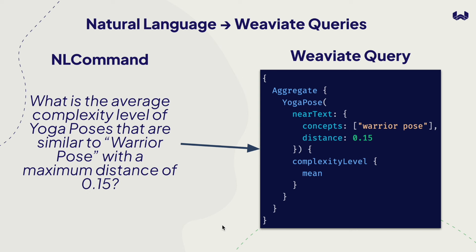Let's say we have a natural language command with a pretty complex Weaviate query: 'What is the average complexity level of yoga poses that are similar to warrior pose with a maximum distance of 0.15?' We translate this into the Weaviate query where we use aggregate on our yoga pose class, we use vector search, and then we use a symbolic aggregation to get the average complexity of the results from our vector search. This is a query that many new Weaviate users don't know you can do.